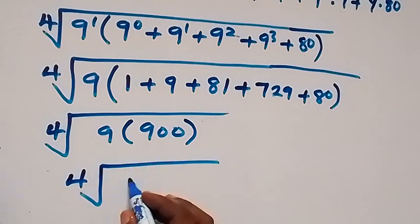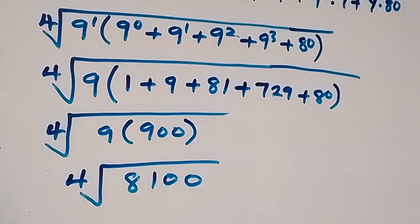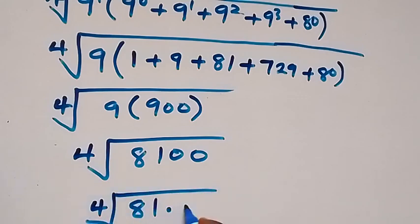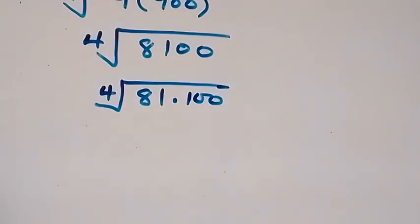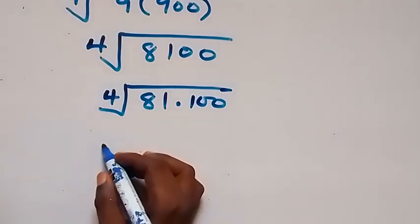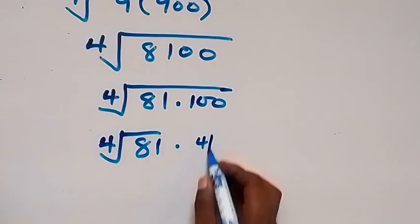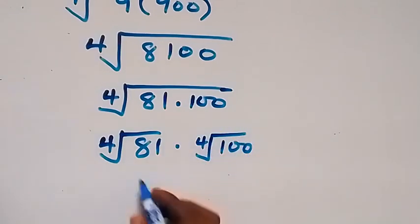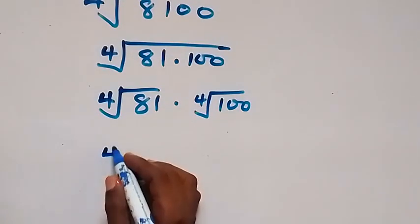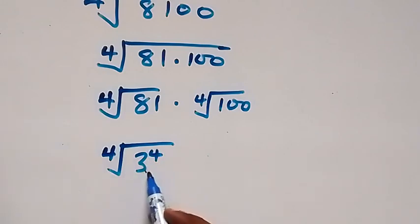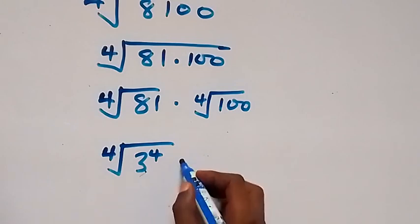From here we can separate it as the fourth root of 81 times 100. We can also separate this into two roots: the fourth root of 81 multiplied by the fourth root of 100. We can write the fourth root of 81 as the fourth root of 3 raised to power 4, since 3 raised to power 4 gives us 81.